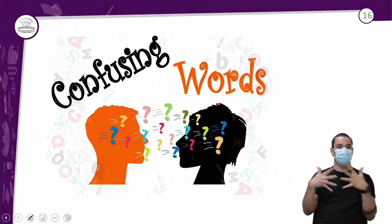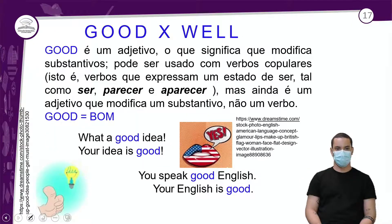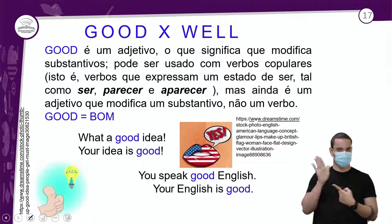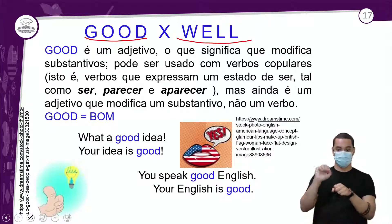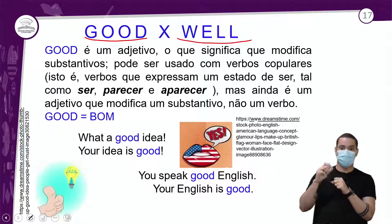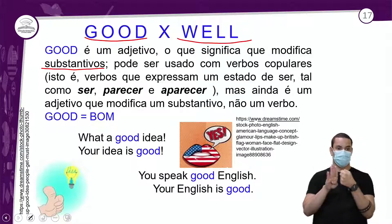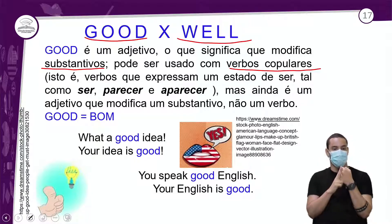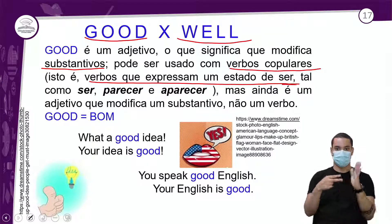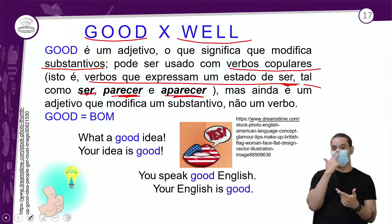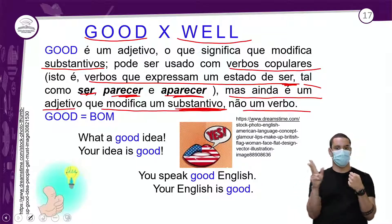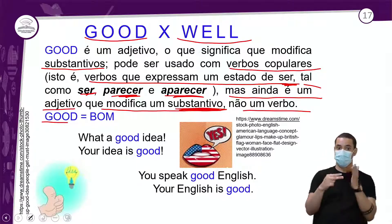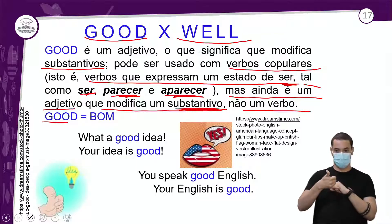Chegamos às nossas confusing words — 'good' and 'well'. Não são tão confusas na escrita, mas é bom prestar atenção. Começamos com 'good': ele é um adjetivo. Ele significa 'bom'. Por ser adjetivo, modifica substantivos. Pode ser usado com verbos populares que expressam estado de ser, como 'ser' e 'parecer'.